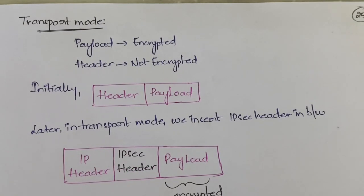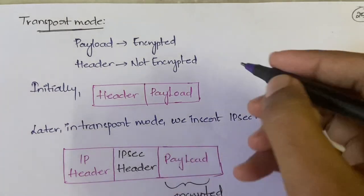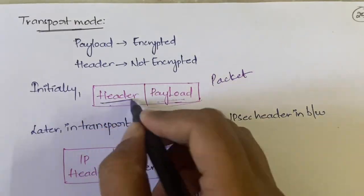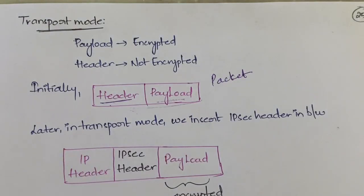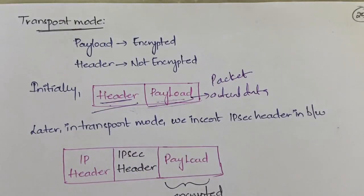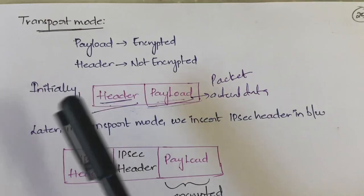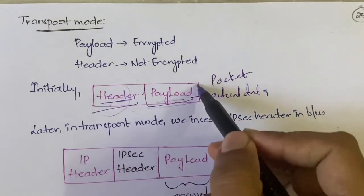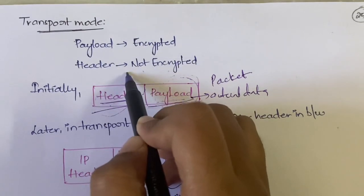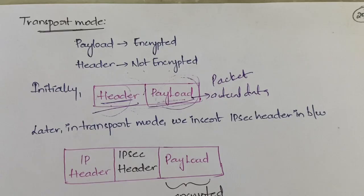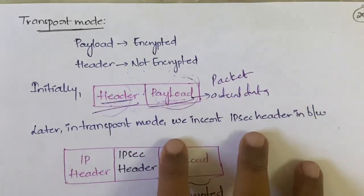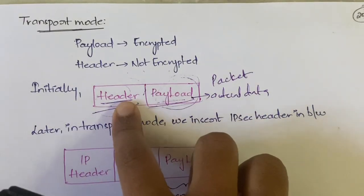Let me explain Transport Mode. Initially, a packet has a header and a payload. The header contains addressing information and the payload is the actual data. In transport mode, we encrypt the payload but we do not encrypt the header. To encrypt the payload, we insert the IPSec header in between the IP header and the payload.